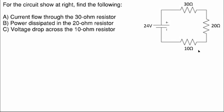Let's take a look at how we would solve a series circuit like the one shown at the right. We're asked to find the current flow through the 30 ohm resistor, let's call that R1, the power dissipated in the 20 ohm resistor, let's call that R2, and the voltage drop across the 10 ohm resistor, let's call that R3.